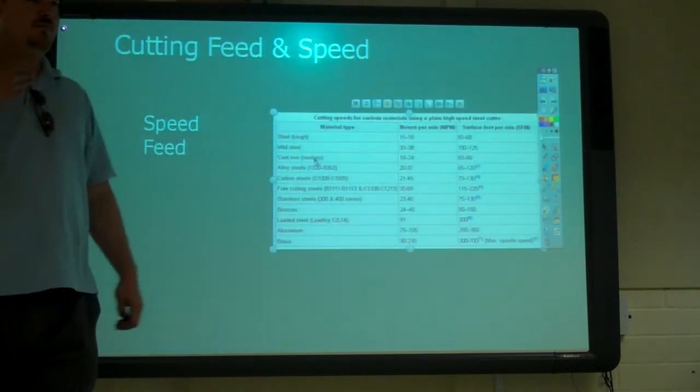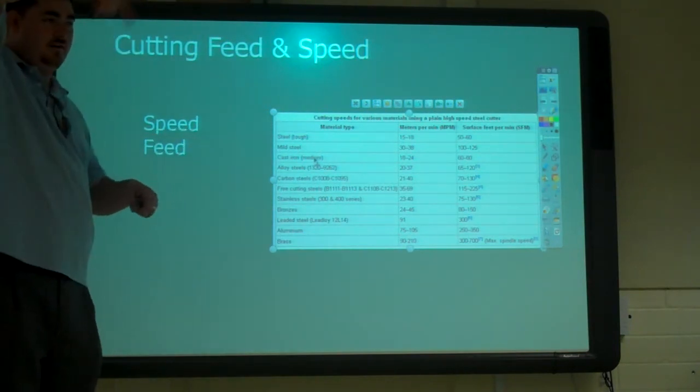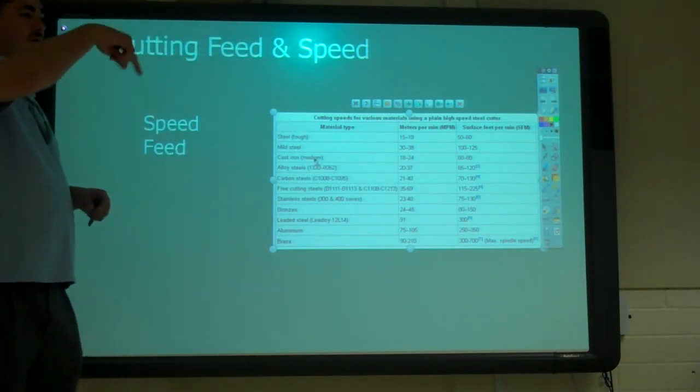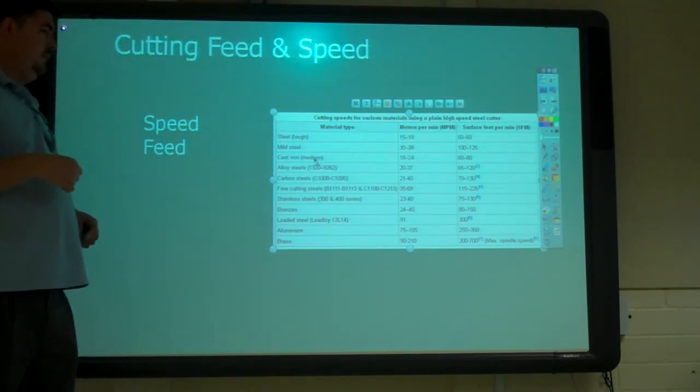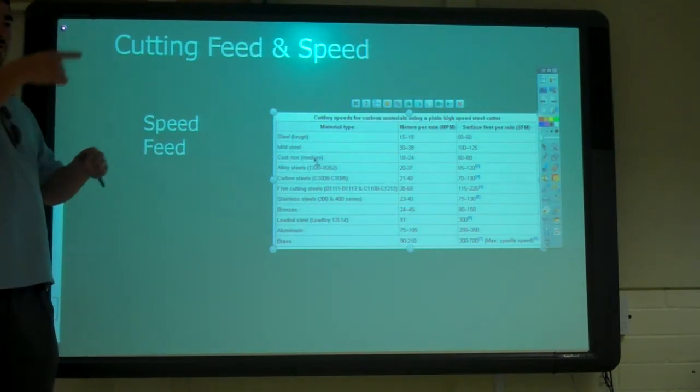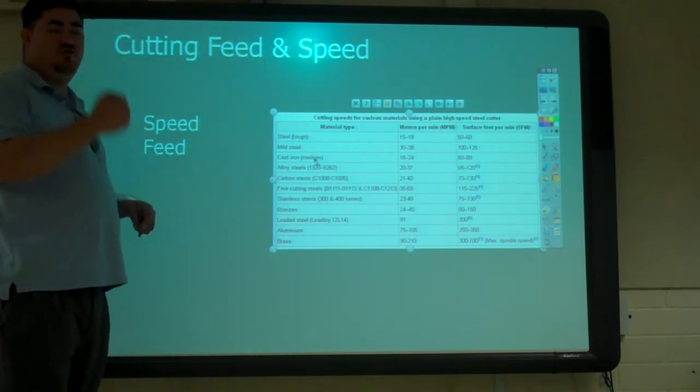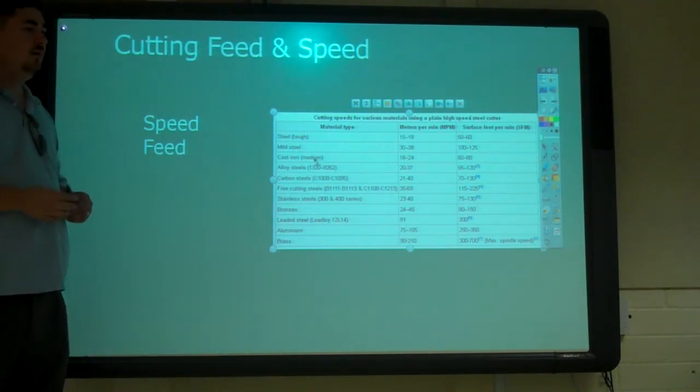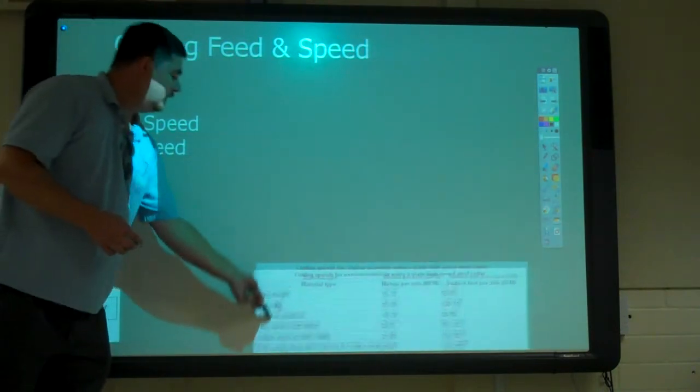Feeds is how fast you're actually moving the tool through the material. So the speed would be how fast the cutter is turning, and the feed is how fast you're going through it. So on a mill, the spindle is turning, that's your speed. The feed is how fast it's moving, in inches per minute, usually. If you're doing a lathe, the speed is how fast the part is turning, and the feed is how fast you're moving your tool. On a drill, your feed is how fast you're pushing, how fast you're pressing the drill down on it.